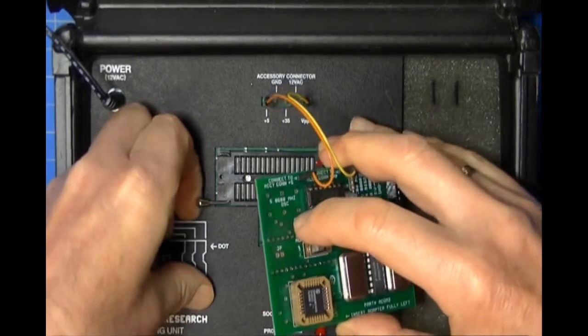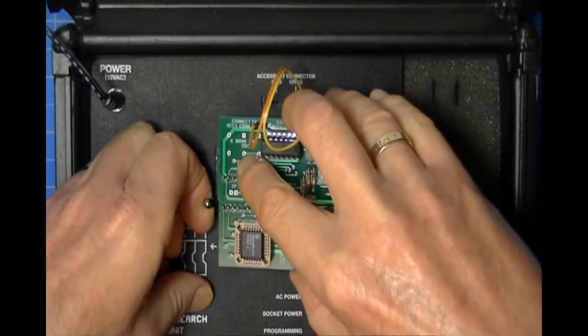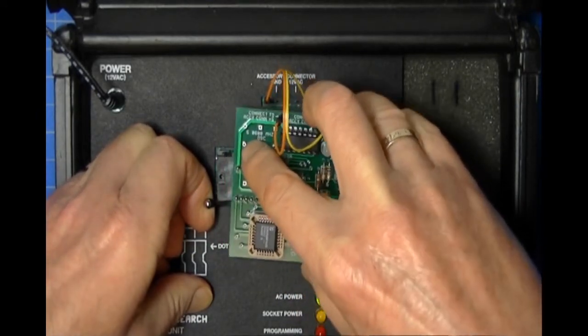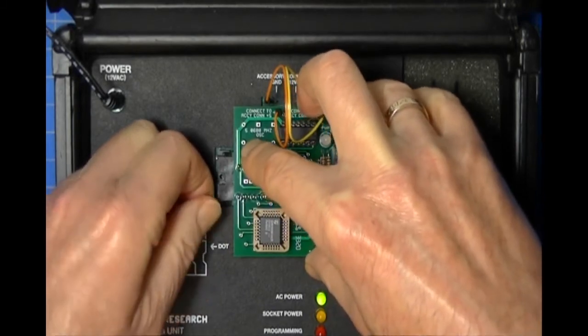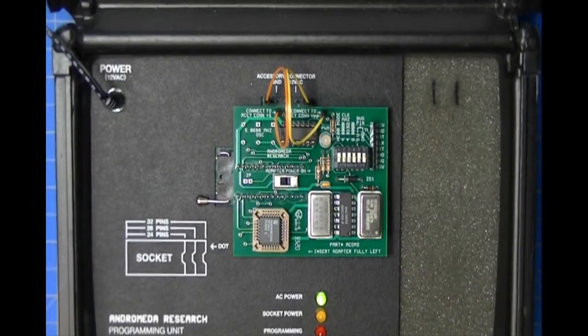Here is the adapter. To install it in the programming unit, we just lift the handle, make sure it's fully left justified, and slip it into the ZIF socket on the programming unit. Make sure it's fully seated, and now we're ready to use the ACOM 2.